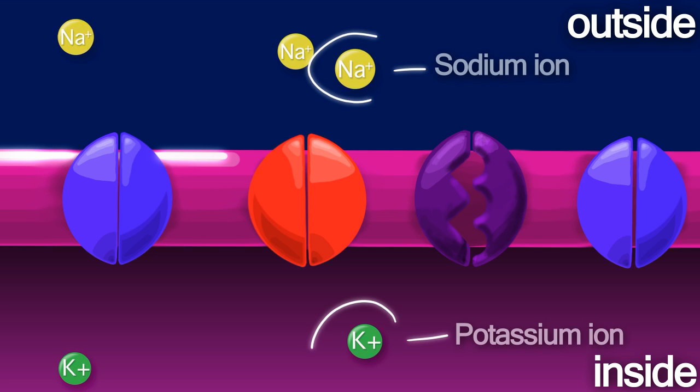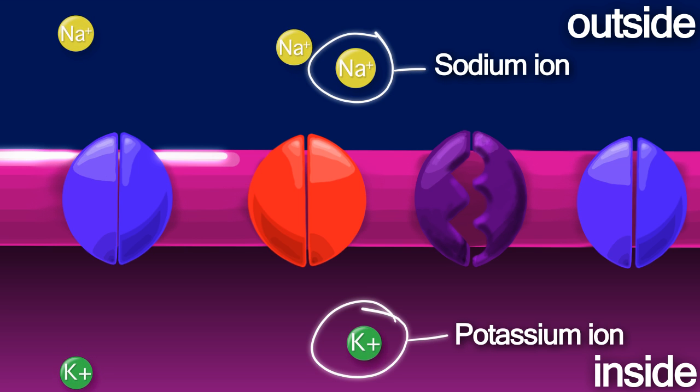Two important ions are sodium and potassium. In the cell's polarized state, potassium ions are concentrated inside the cell membrane, and the sodium ions are concentrated mostly outside the membrane.